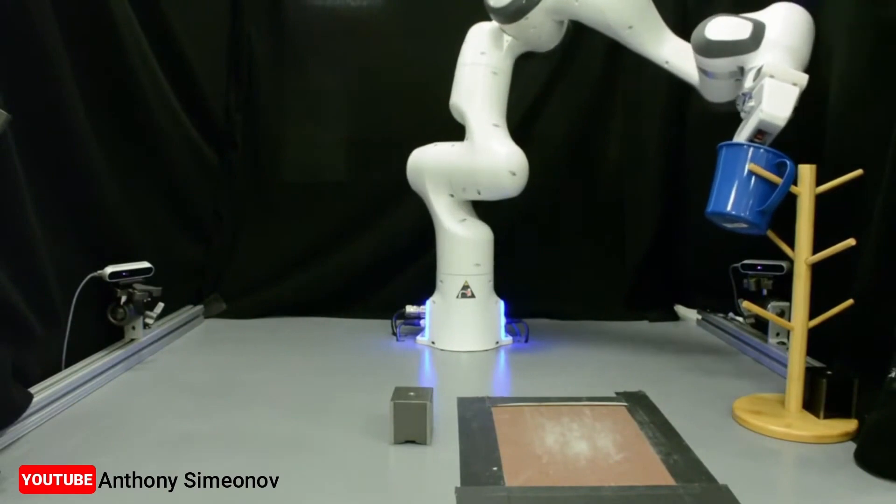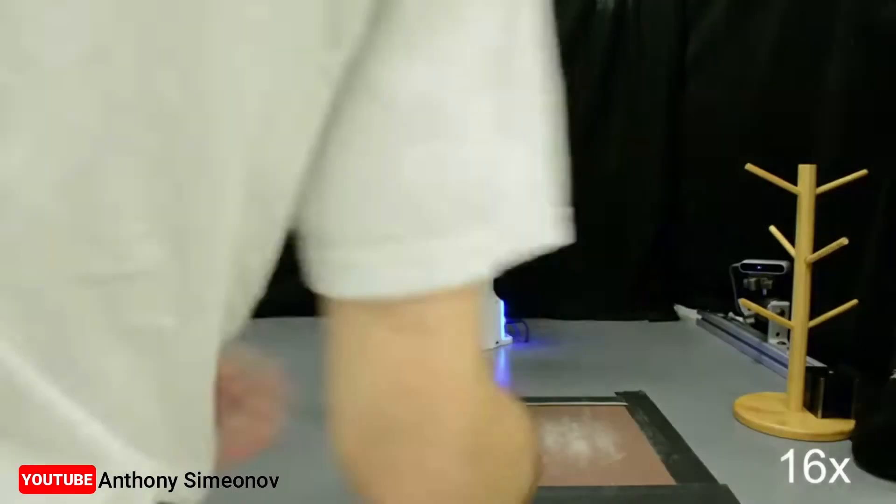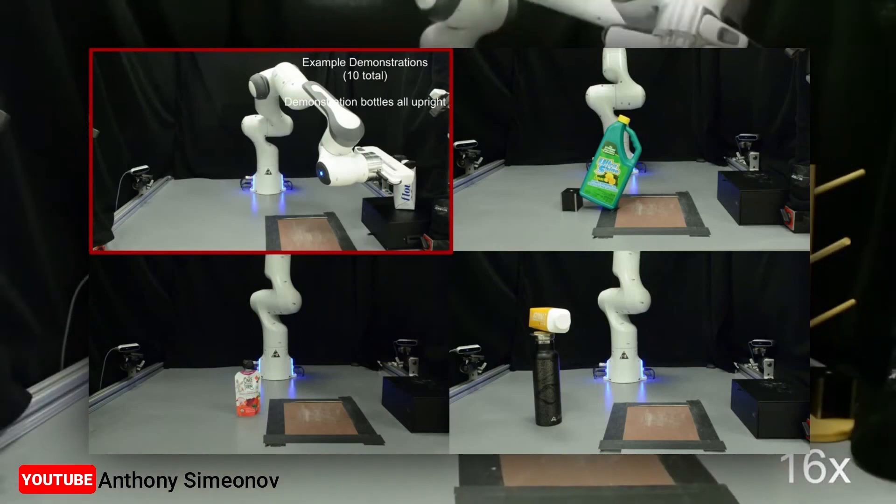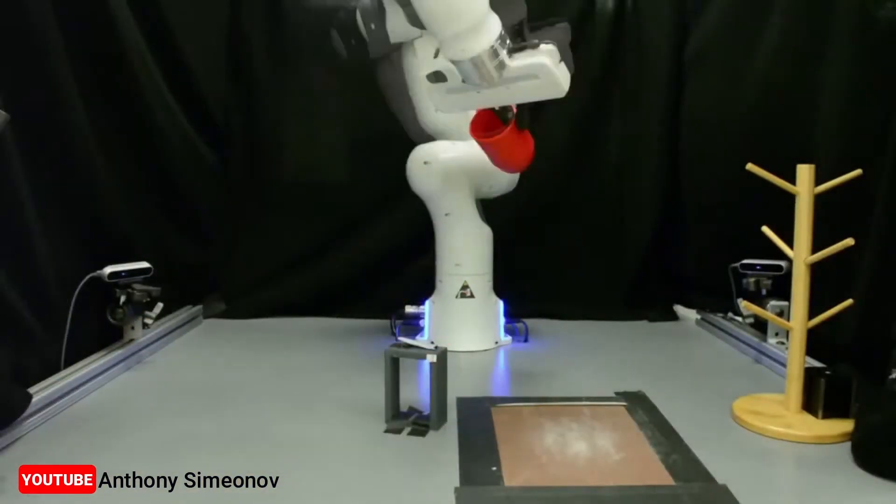This machine learning method enables a robot to pick up and place never-before-seen objects that are in random poses it has never encountered. Within just 10 to 15 minutes, the robot would be ready to perform a new pick-and-place task.